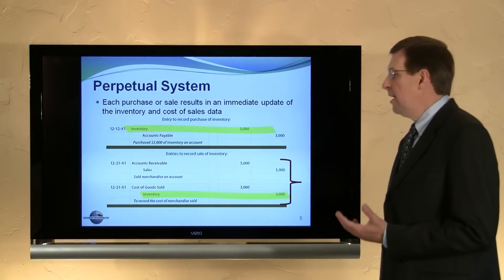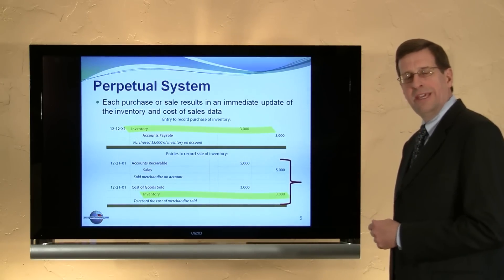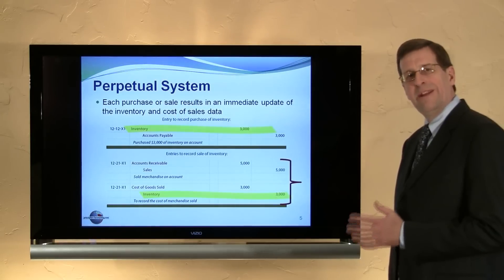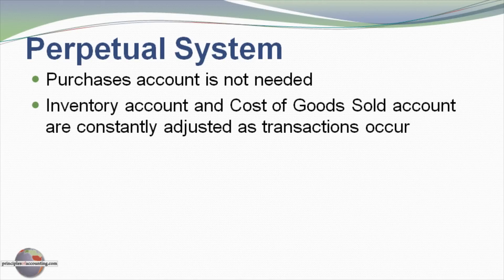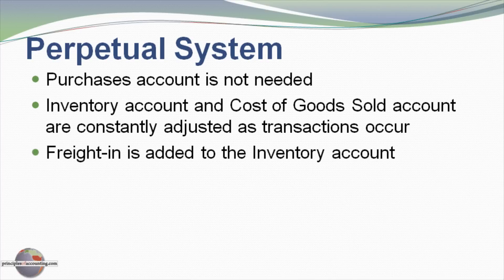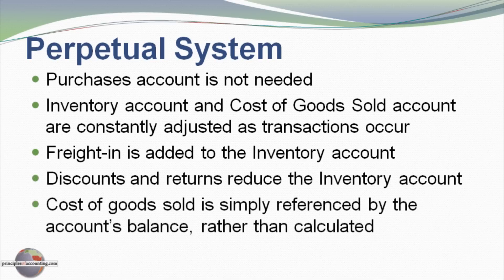A second entry is needed here. If this were a periodic system, we would have only recorded the sale and sorted out the actual ending inventory information later. With a perpetual system, a purchases account is not needed. The inventory account and cost of goods sold accounts are constantly adjusted as transactions occur. If there's freight cost, freight-in is added to the inventory account. If there are discounts, those reduce the inventory account directly. Cost of goods sold is determined by reference to the general ledger since it's constantly being updated as goods are sold.